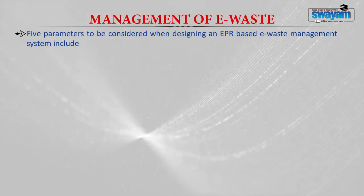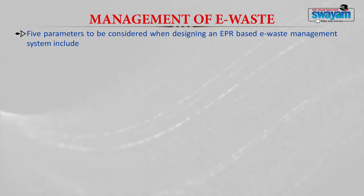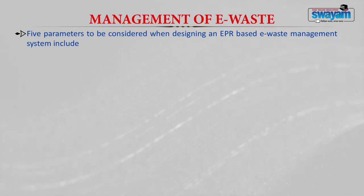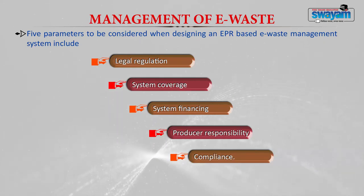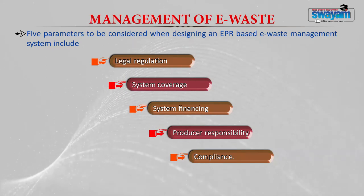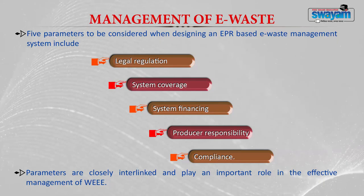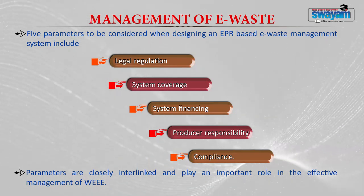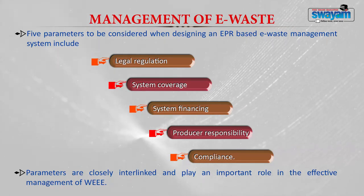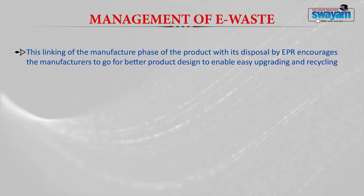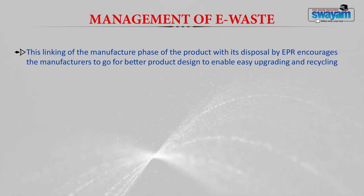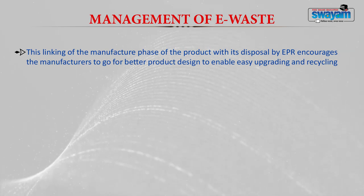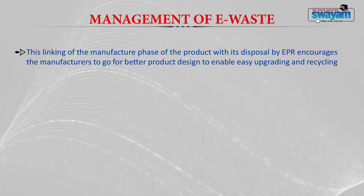There are five parameters to consider while designing an EPR-based e-waste management system: legal regulation, system coverage, system financing, producer responsibility, and compliance. These parameters are closely interlinked. Linking the manufacturing phase with disposal through EPR encourages better product design, easier upgrading and recycling, which increases product life and minimizes e-waste generation.